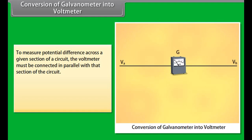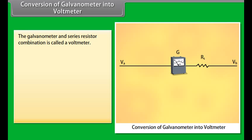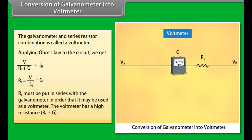Conversion of galvanometer into voltmeter: To measure potential difference, the voltmeter is connected in parallel with the circuit section. The range is extended and equivalent resistance increased by connecting a resistance R_S in series with the galvanometer. Applying Ohm's law: V / (R_S + G) = I_G, giving R_S = V/I_G minus G. R_S must be put in series with the galvanometer so it may be used as a voltmeter. The voltmeter has a high resistance of R_S + G.